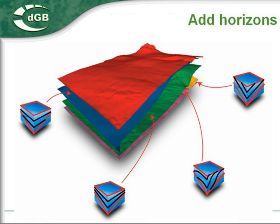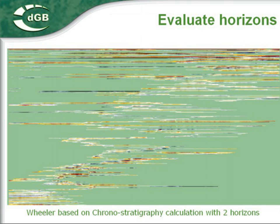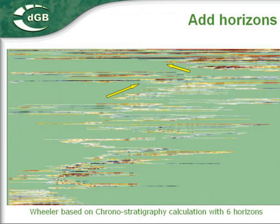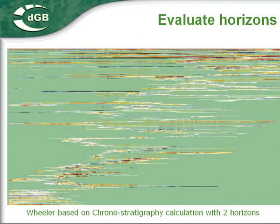Another way to improve the grounor stratigraphy is by adding additional horizons. In this example, we have flattened the seismic data with a grounor stratigraphy that was calculated with only a top and a base horizon. This flattening is called a Wheeler transform. The vertical axis in this display is relative geologic time, showing the extent of each geologic layer and how the depositional center shifted over geologic time. Where there are gaps, we are dealing with non-deposition or erosion. This is the result of a Wheeler transform using a grounor stratigraphy based on six horizons. Note the much sharper definition of the progradational and retrogradational trends.